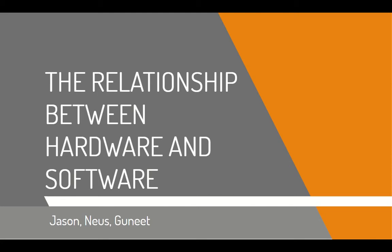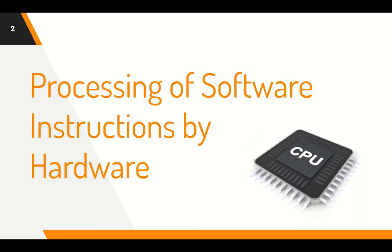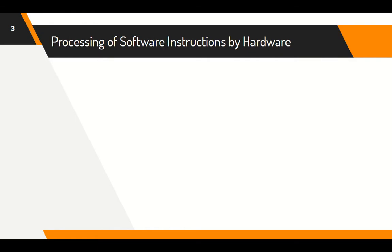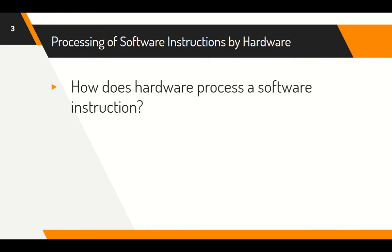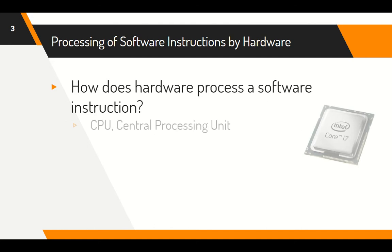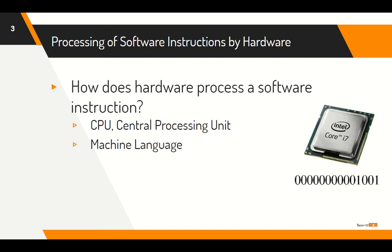The relationship between hardware and software. How does hardware process a software instruction? Software instructions are processed by the CPU, the central processing unit, which is the piece of hardware that carries out the instructions of any computer program. Instructions processed by the CPU are always in machine language, which is basically ones and zeros. This is all the CPU can understand.